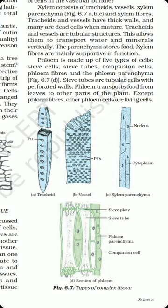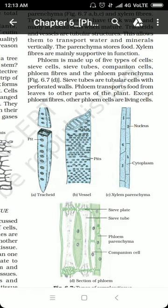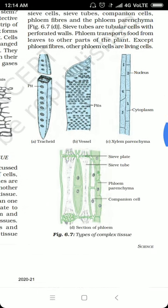The sieve tube is an anucleated body — it is a phloem element that has no nucleus of its own. However, it is always accompanied by a companion cell which contains a nucleus to regulate the necessary activities of the sieve tube.